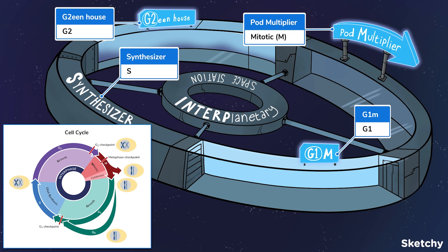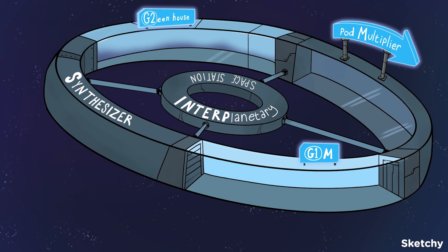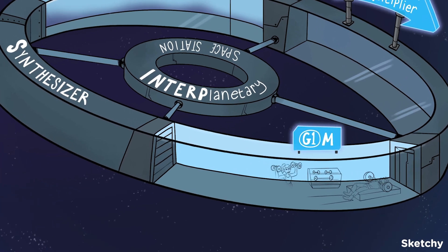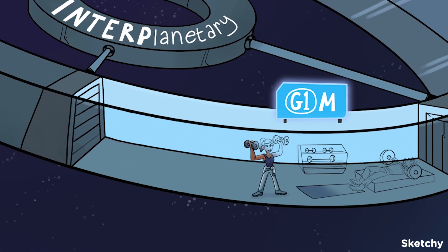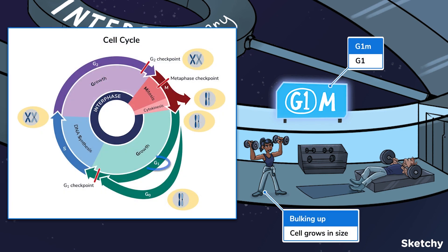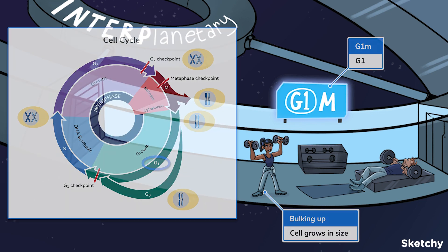Let's take a tour of the facilities. Here at the gym is where nerds like myself get swole. G1, the first gap or growth phase, is essentially a gym for cells. G1 is usually the longest stage of the cell cycle. In G1, the cell ramps up protein synthesis while increasing its size and number of organelles to prepare for DNA replication.